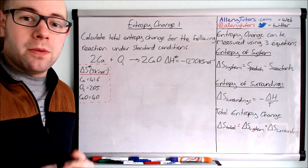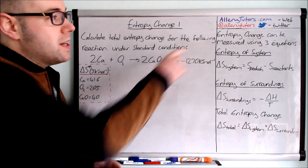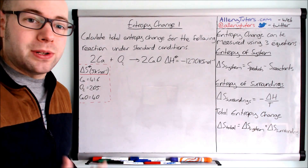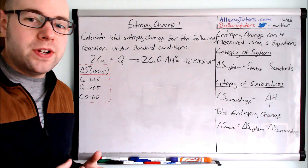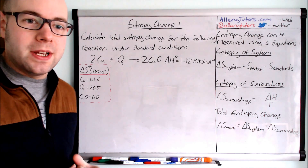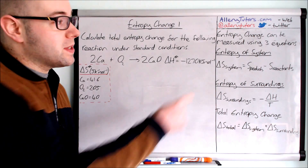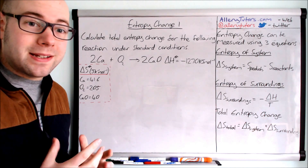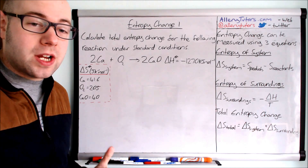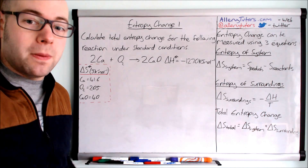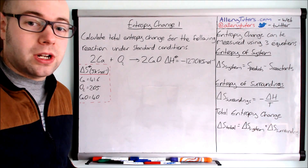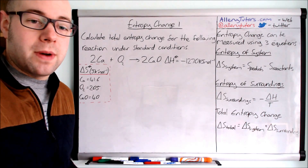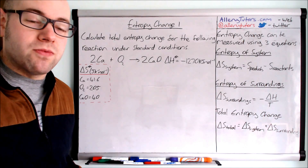We're going to start by looking at what the entropy change is. The first equation is the entropy of the system. The entropy of the system is products minus reactants. This is basically the entropy change that happens in the actual beaker. You find out the total entropy for the products and subtract it from the total entropy of the reactants.